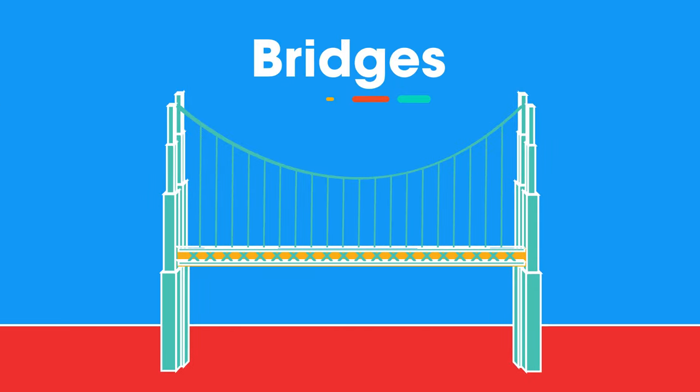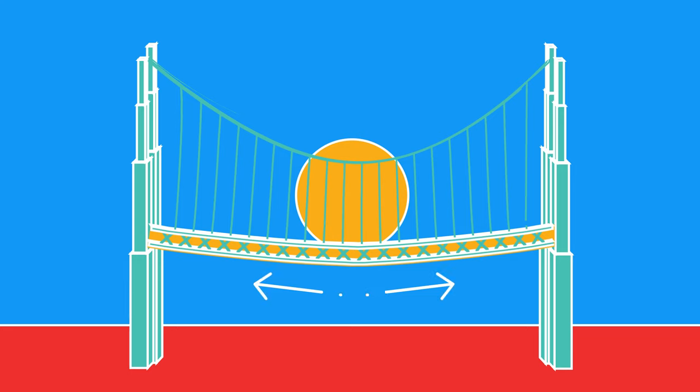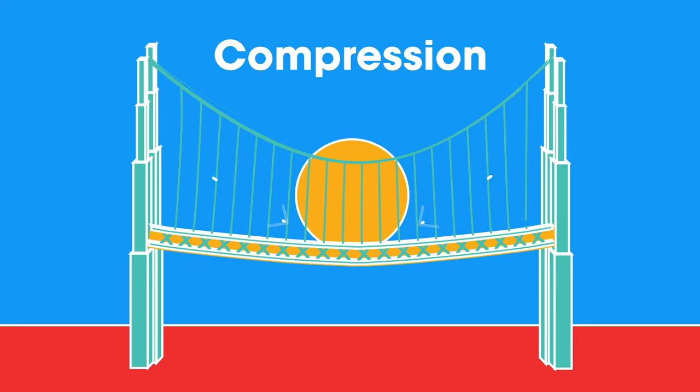Some objects, like bridges, will also behave like springs. When a weight is placed on a bridge, parts will be stretched and under tension. Other parts will be squashed together or compressed.